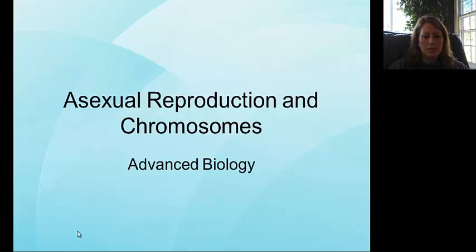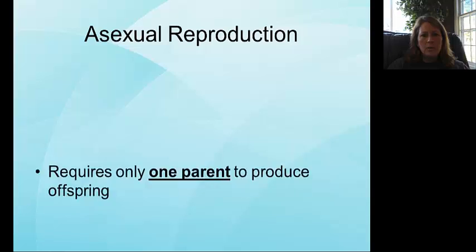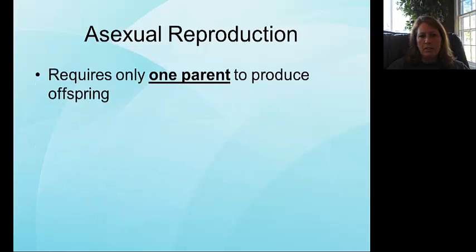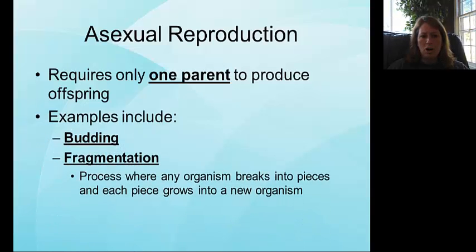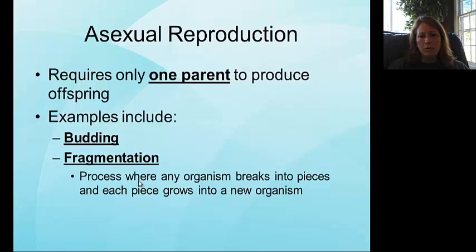Welcome. For this particular lecture we are going to be focusing on asexual reproduction, chromosomes, and a few other terms. To start off, asexual reproduction really only requires one parent to produce offspring. Make sure you know these examples — it will be on your quiz, and for your quiz you will not be able to use your notes. The questions will only come from the lecture, not from the reading.